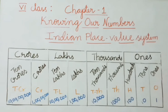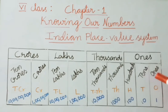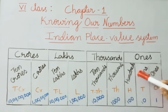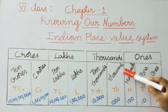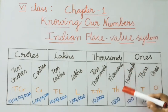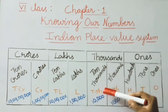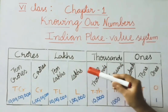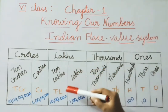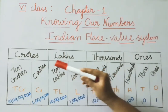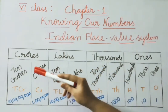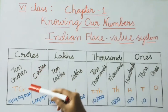These places are each denoted with letters. 1s is denoted with O, 10s means T, 100s means H, 1000s means TH, 10,000s means TTH, lakhs means L, 10 lakhs means TL, crores means CR, and 10 crores means TCR.